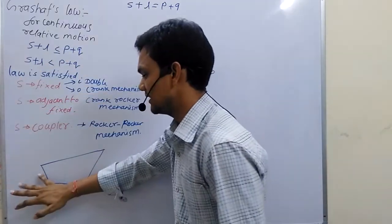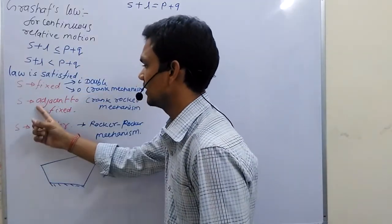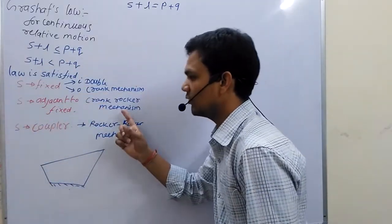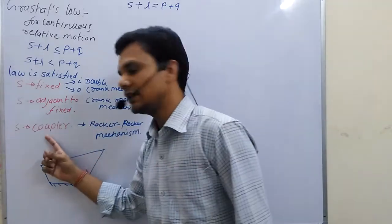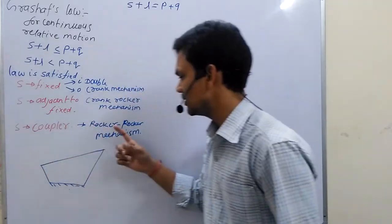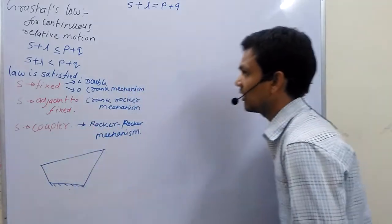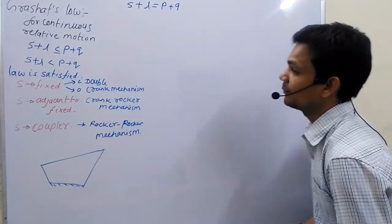If the smallest link is adjacent to fixed, then we obtain a crank-rocker mechanism. If it is at the coupler position, then we obtain a rocker-rocker mechanism.